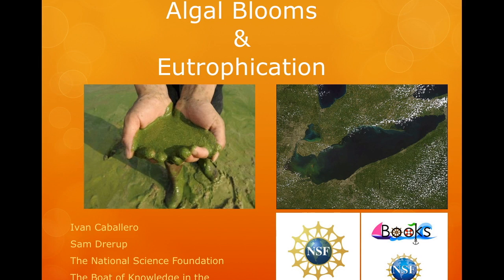This lesson covers the topic of algal blooms and eutrophication in fresh water. It is to be presented in conjunction with hands-on lab activities involving the growth of two different types of algae under nutrient-enriched conditions. This lesson was prepared by Ivan Caballero and narrated by Sam Drerup, created as part of the Boat of Knowledge in the Science Classroom Books Project at Ohio University, funded by the National Science Foundation.